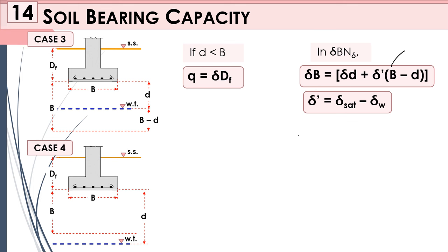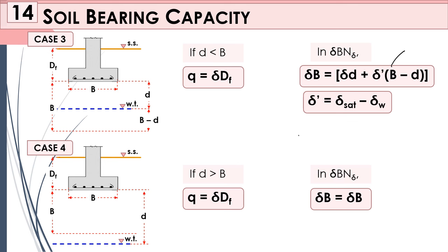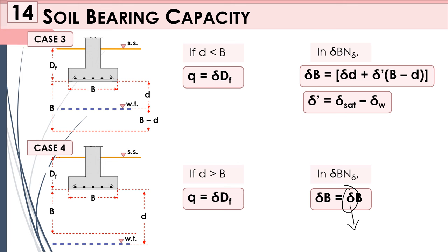Case 4 is when the depth of the water table from the bottom of the footing is greater than the value of B. In this case, q = γdf and the γBNγ term simply uses γ — the dry unit weight — without any modification. This is because the water table is so far below the footing that the soil within the depth B below the footing is considered dry.